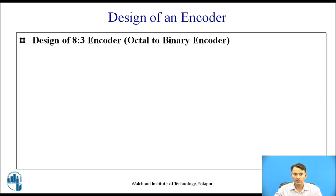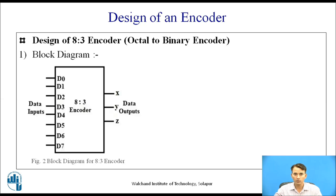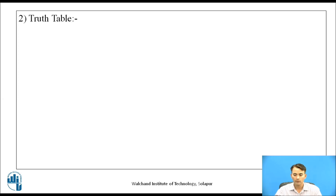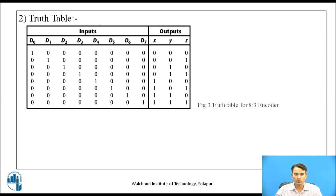Let us design an 8-to-3 encoder, also known as an octal to binary encoder. The first step to design any combinational logic circuit is to draw the block diagram. As we know, 8-to-3 means there are 8 octal inputs denoted by d0, d1, d2, d3, and so on up to d7, and 3 binary bits are required to encode the octal number, using x, y, z as the 3 binary output bits.